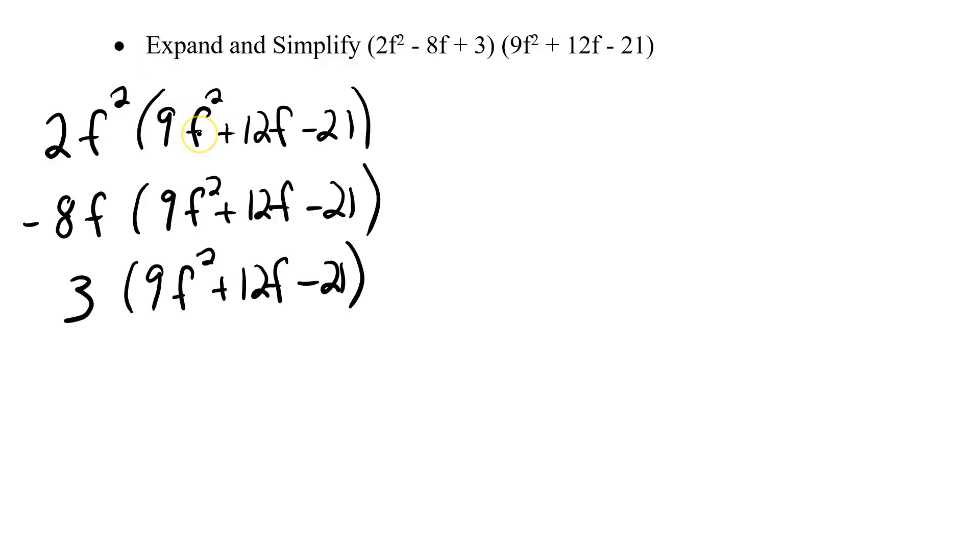So let's start multiplying. 2f squared times 9f squared, that's 18 f to the fourth. 2f squared times 12f gives me positive 24 f to the third. And 2f squared times negative 21 will give me negative 42f squared.